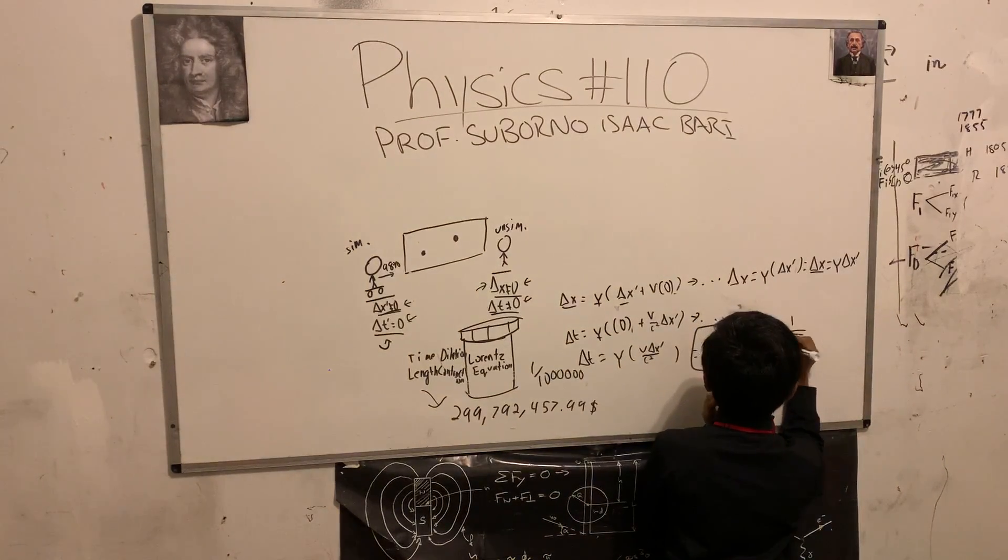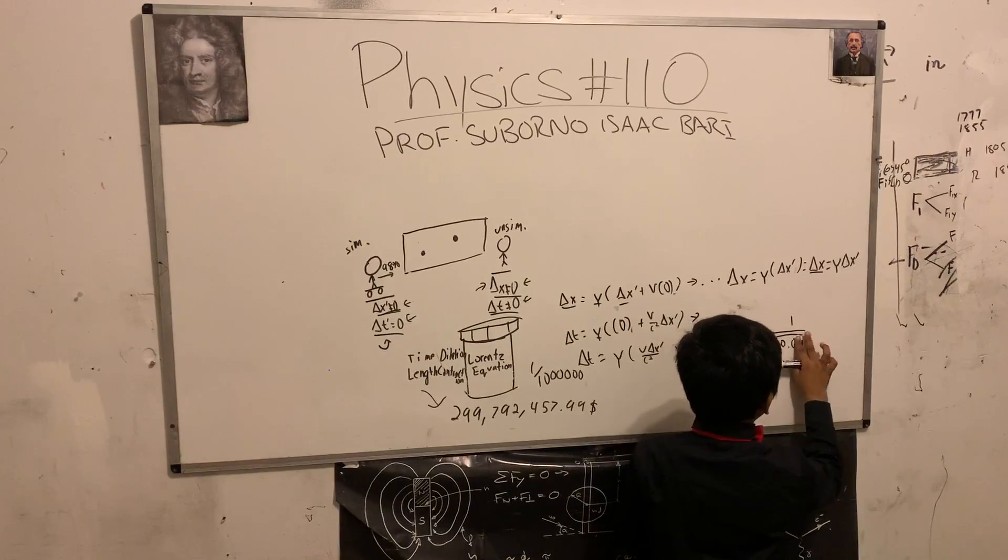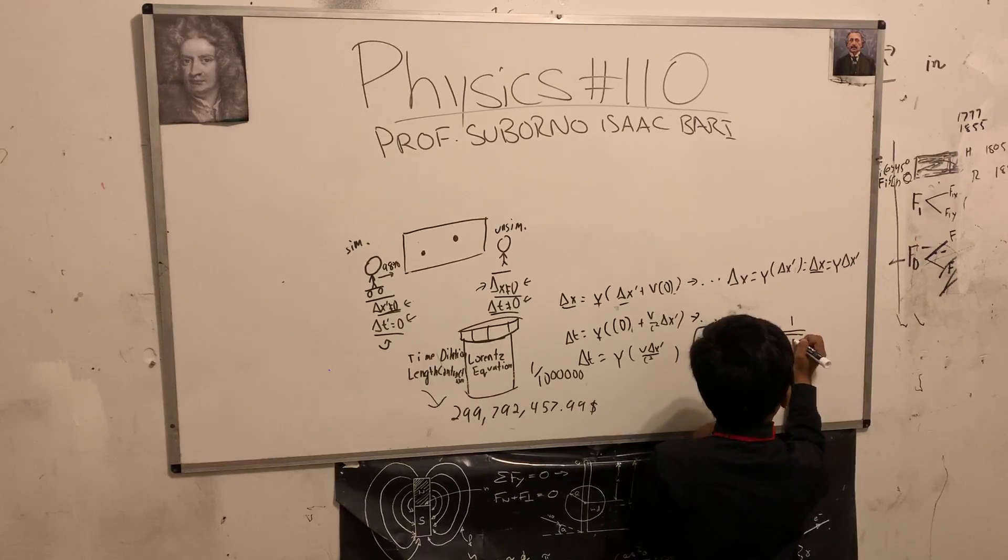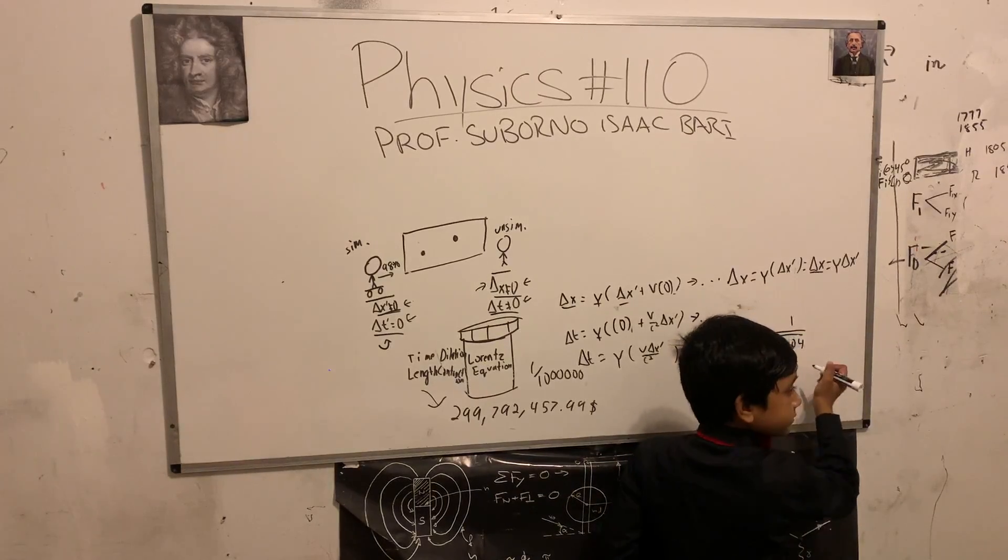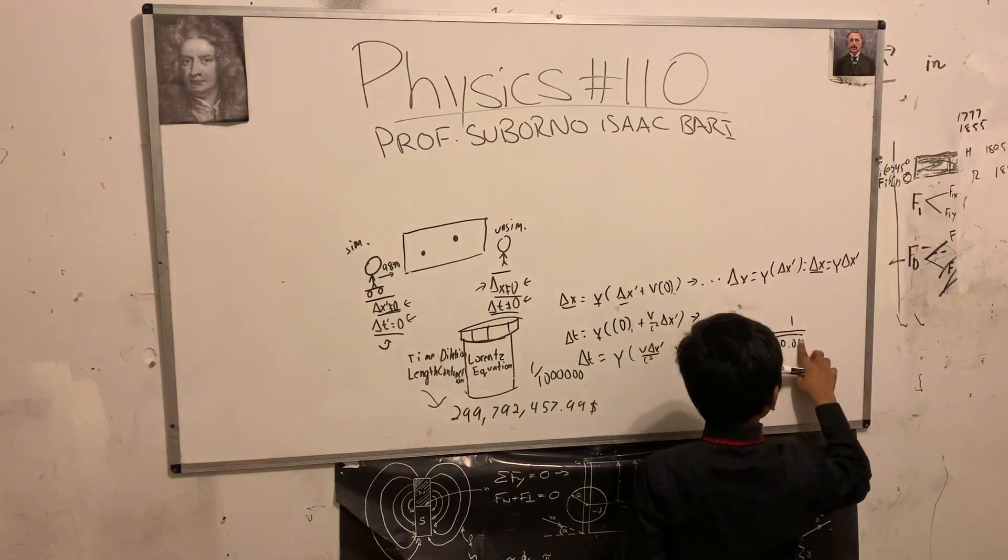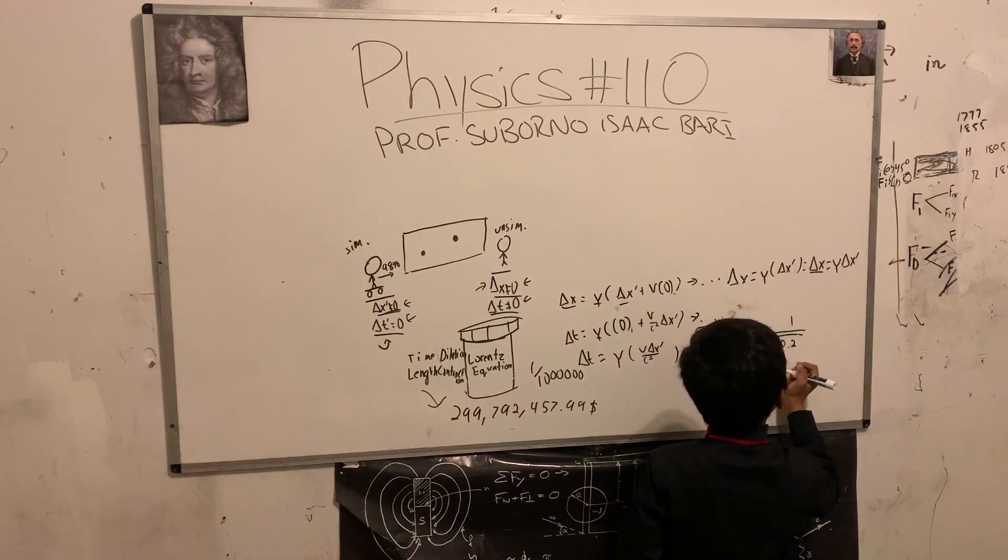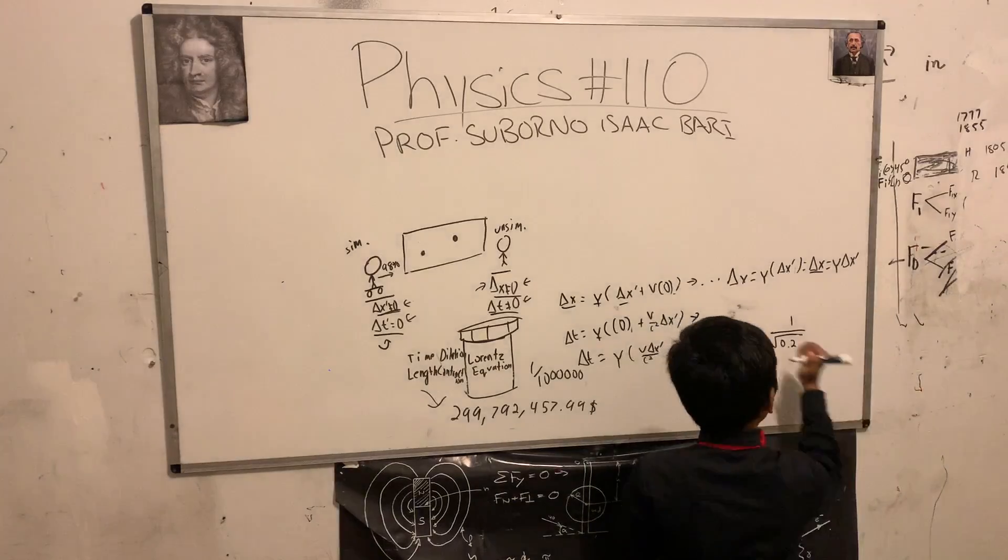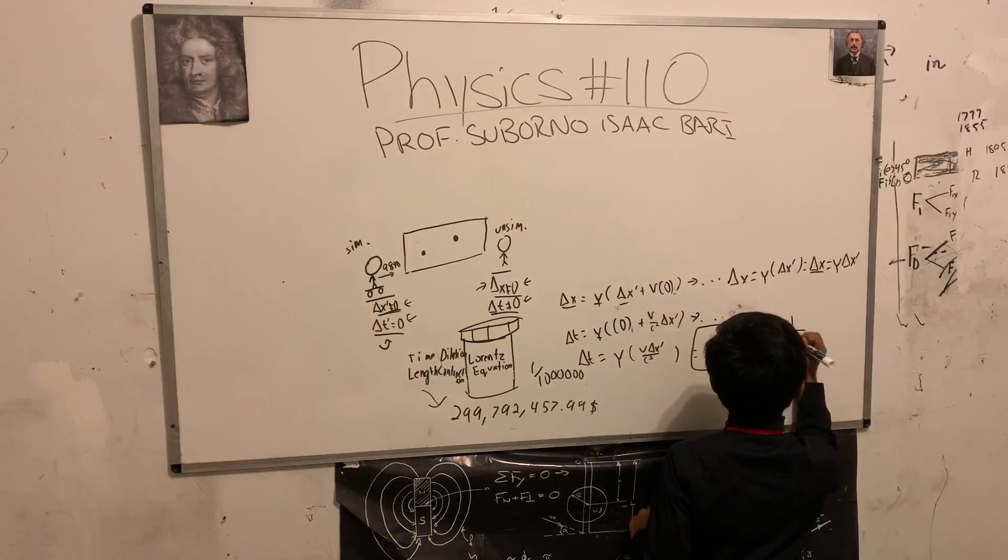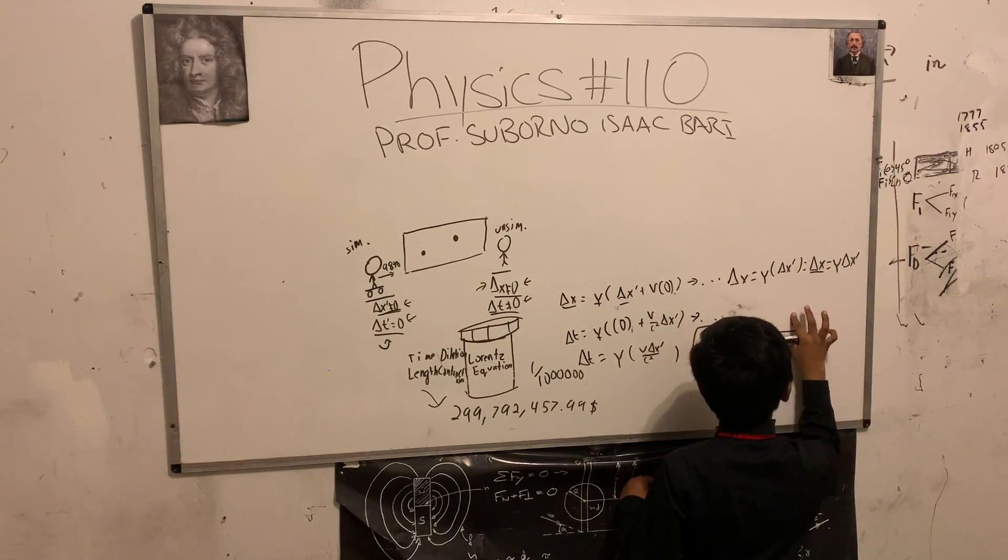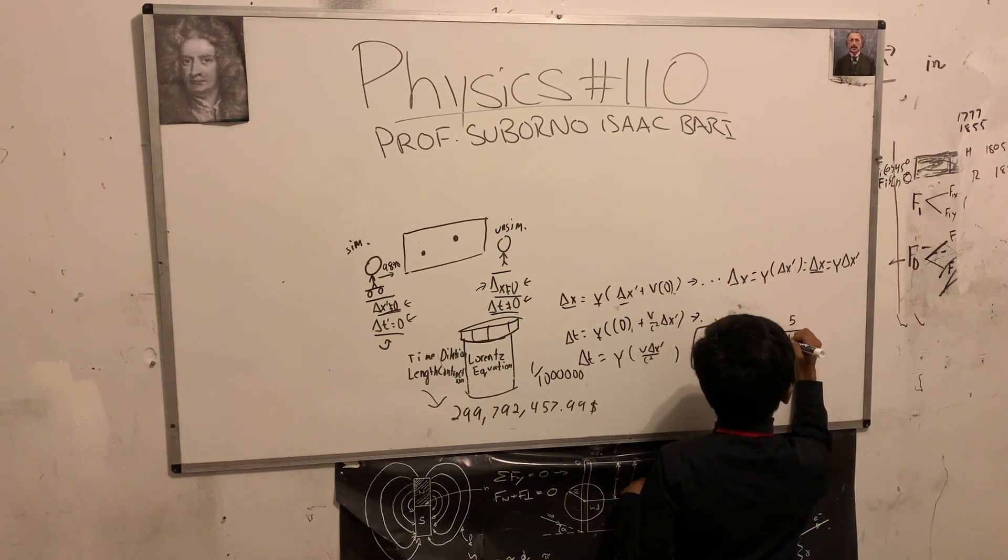Sorry for the absurd question, but what is the square root of 0.96? Oh wait, yeah, 1 minus 0.96 is 0.04. 0.02 after taking the square root. Yeah, okay, sorry. 1 over 0.2, which gives us if we multiply everything by 5, 5 over 1.